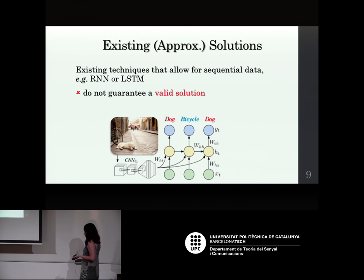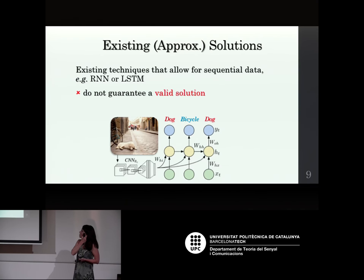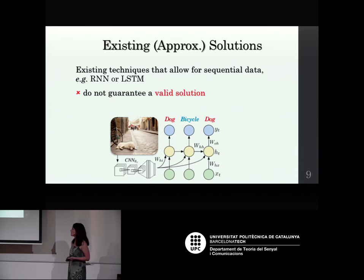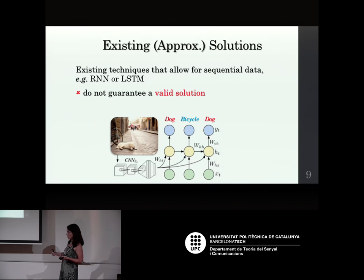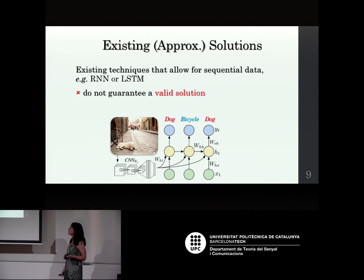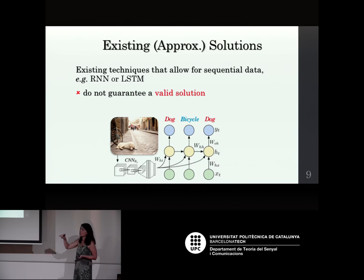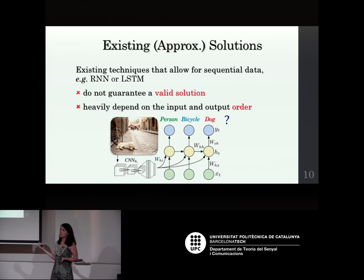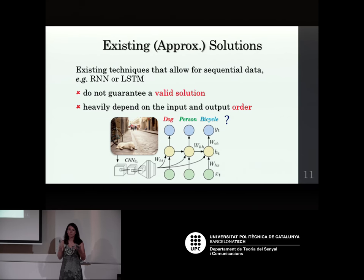Current solutions use RNNs or LSTMs, treating the set elements as a sequence. For example, you output words like 'dog', 'bicycle', 'person' sequentially and train the network to output an empty word when done. The problem is this doesn't guarantee a valid solution — you might output 'dog' twice — and the order has no meaning. There's no reason to output 'person' before 'bicycle' versus the other way around.